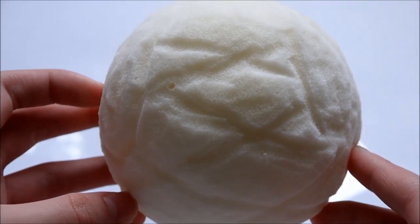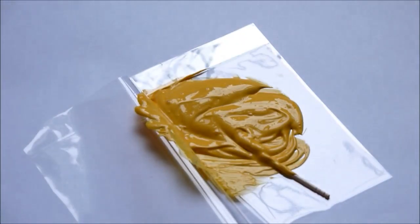Now that you have cut out the melon bun shape, you're just going to go ahead and paint it with this yellow color.